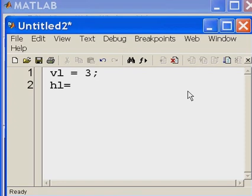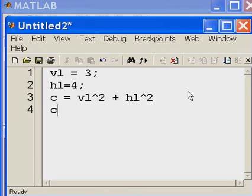Horizontal leg is going to equal 4, and c will equal vertical leg squared plus horizontal leg squared. And then that gives me c squared really. So c equals the square root of c.